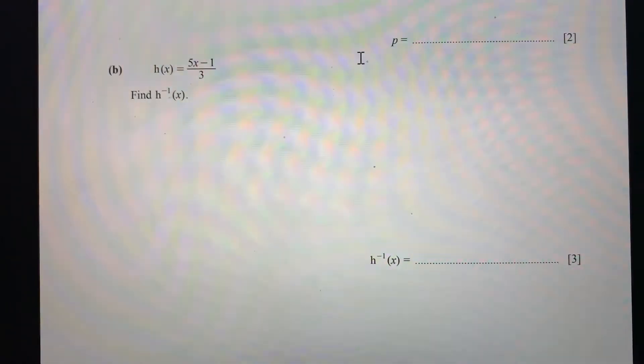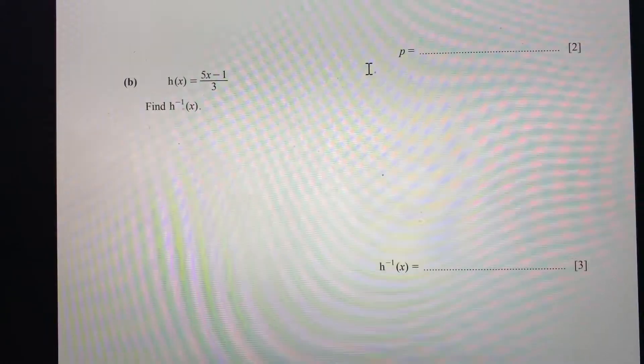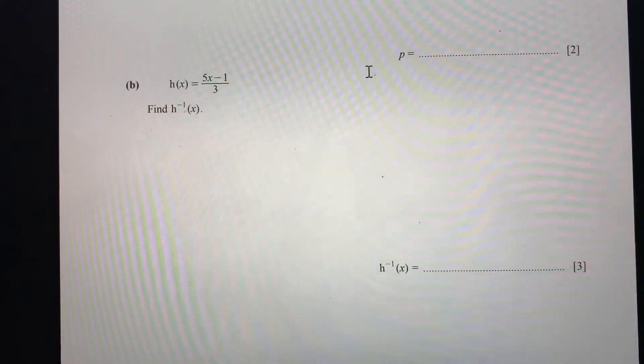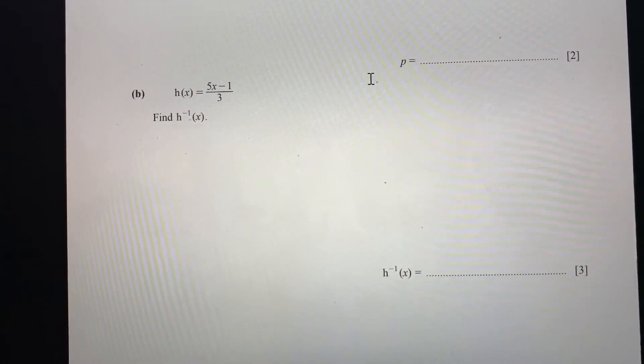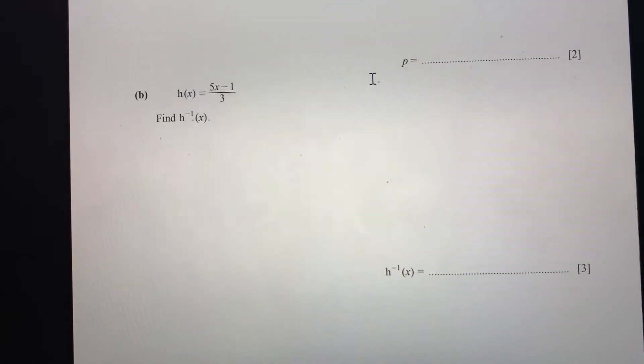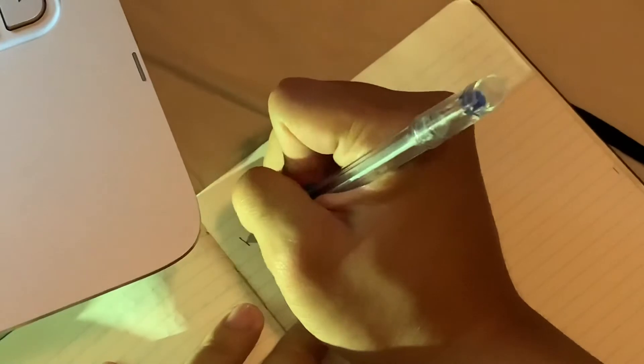Today we'll be discussing how to get h(x) equals 5x minus 1 over 3, and find the inverse of h. Let's go and try and do it on the paper. So h(x) equals 5x minus 1 divided by 3, and we are supposed to find the inverse.